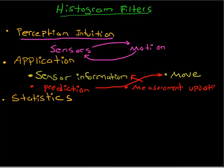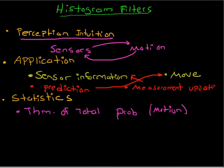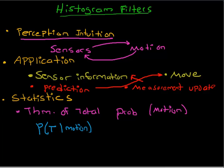Motion in general is going to be modeled by the theorem of total probability. If you don't know the theorem of total probability, I recommend you look it up first. What we're going to calculate with motion is the probability of being at a current state — the probability of being at a state at time t — based on a motion that we took. We want to calculate the probability of being in a certain state at time step t based on motion.